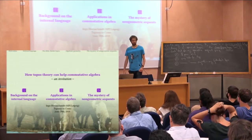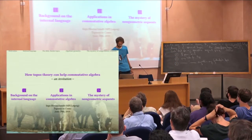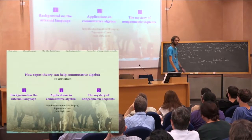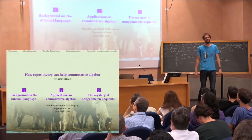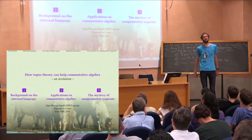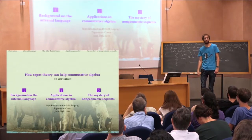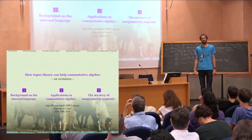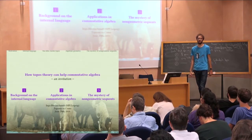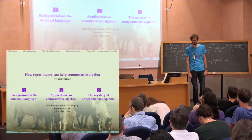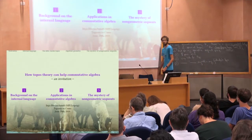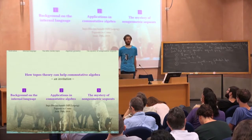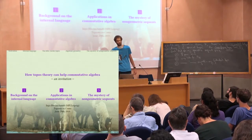In this talk we will first use the magic of topos theory in order to fix the image quality much better, and then we will have a quick discussion of the proper background of the internal language of toposes, see how it applies to commutative algebra, and finally have a very, very embarrassing slide. You have been warned. If you have questions just ask them during the talk, don't spare them till the end.